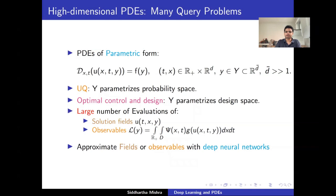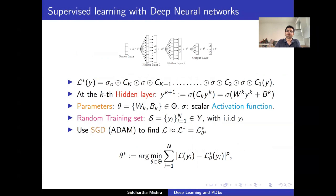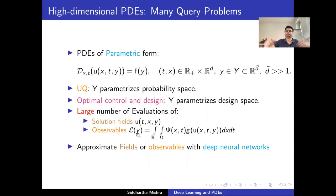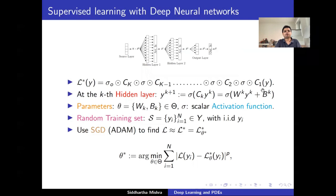Deep neural networks are everywhere these days: in face recognition, speech recognition, YouTube recommendations, self-driving cars, even protein folding. They are increasingly being used in scientific computing. For my purposes, deep neural networks are just functions. We have a parameter vector y, which could be 20- or 50-dimensional, and the output could be a number or a field. Deep neural networks have a very specific compositional structure: you start with an input vector and pass it through different layers.